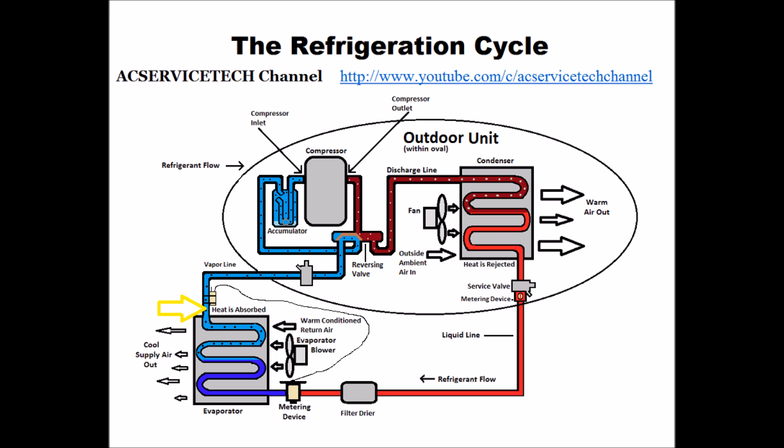In this case, since it's a heat pump, this will be considered the indoor coil — but since we're in cooling mode, that is the evaporator coil. Right where it comes out of the saturated state it turns into a complete vapor, and it increases in temperature by absorbing heat from the house until it comes out of the evaporator coil. That temperature increase in vapor form is called the superheat. The temperature increase from where it becomes a complete vapor all the way over to the service valve is called the total superheat.